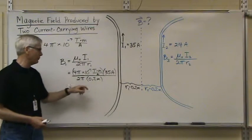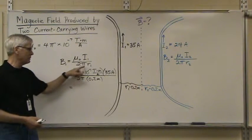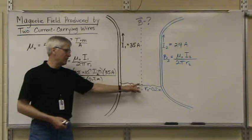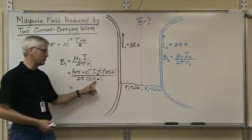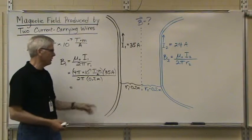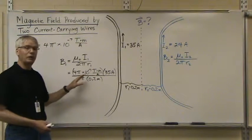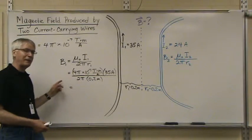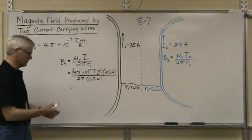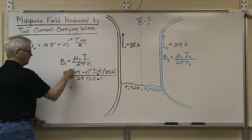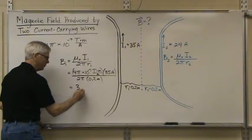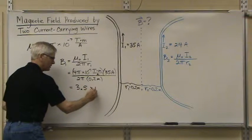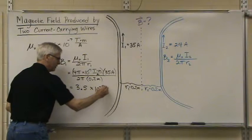Current 1 is 35 amps. 2 pi times the distance that we're measuring the magnetic field from the wire. That's 0.2 meters. These are all metric units. We'll end up getting a value for the magnetic field in metric units. When we do the math, we'll end up with a value of 3.5 times 10 to the minus fifth tesla.